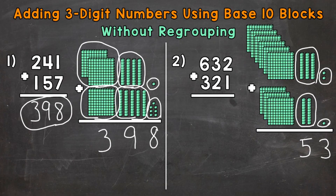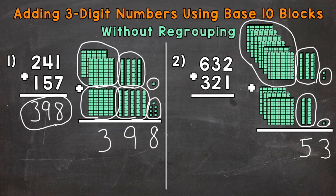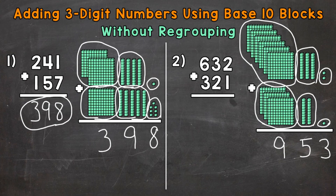Lastly, we have the hundreds. For 632, we have a 6 in the hundreds place — that represents 6 groups of 100, which can be seen here, and has a value of 600. For 321, we have a 3 in the hundreds place, representing 3 groups of 100 with a value of 300. So 6 groups of 100 plus 3 groups of 100 gives us 9 groups of 100, a 9 in the hundreds place with a value of 900.